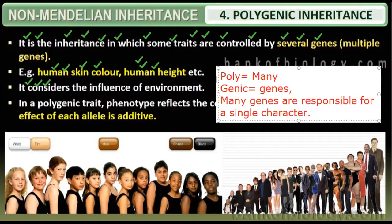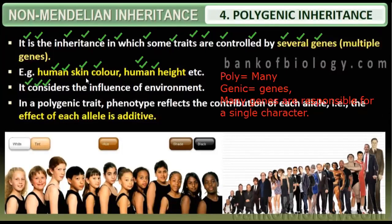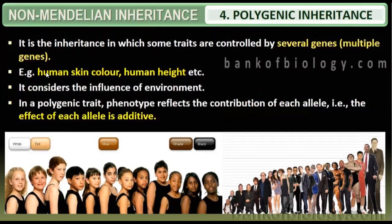We discussed human skin color and human height. These are two characteristics controlled by more than two genes. You can see the variation from clear white to black in skin color, and from pure dwarf to giant in height. Environmental influence plays a great major role in these traits.